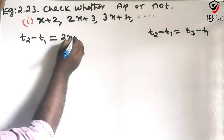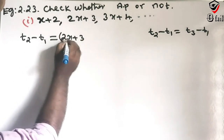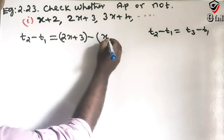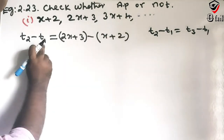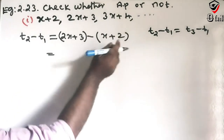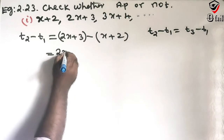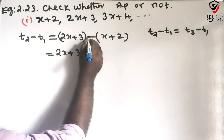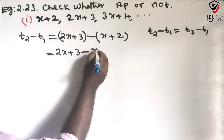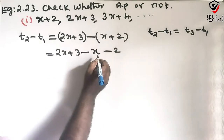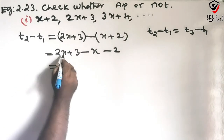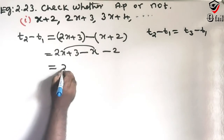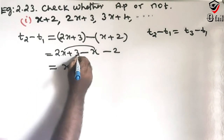T2 minus T1: the first term T1 is X plus 2, and T2 is 2X plus 3. So T2 minus T1 equals 2X plus 3 minus (X plus 2), which gives 2X minus X and 3 minus 2, equal to X plus 1.